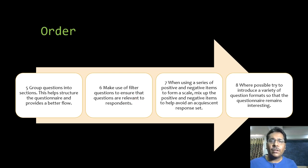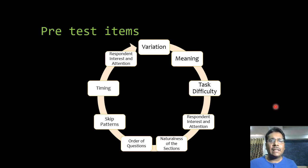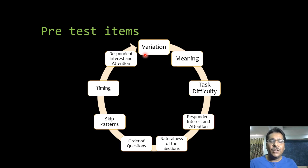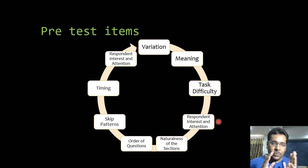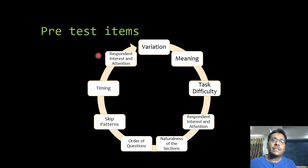We must group questions into similar sections, make use of filter questions, and mix positive and negative items so respondents don't answer in a particular pattern. In the pre-test we check whether there is enough variation in answers, whether the meaning is clear to everyone, whether respondents find it interesting and pay full attention, whether sections are natural, whether order is logical, whether people skip certain questions, and how much time is required.